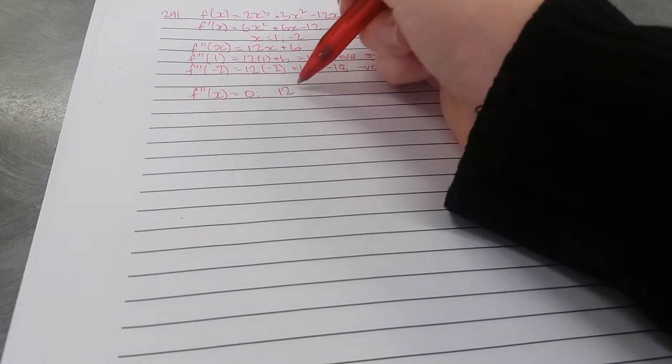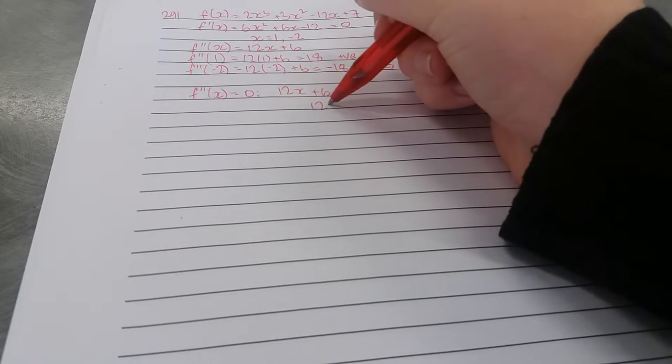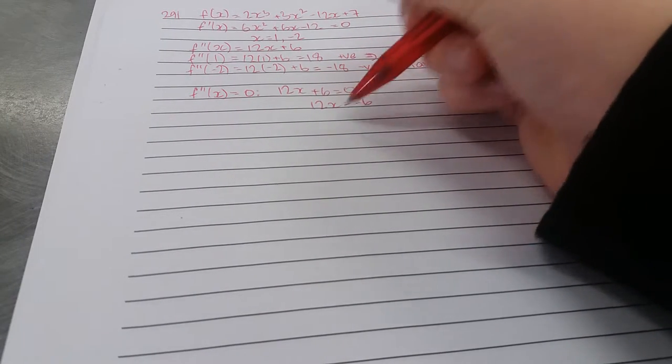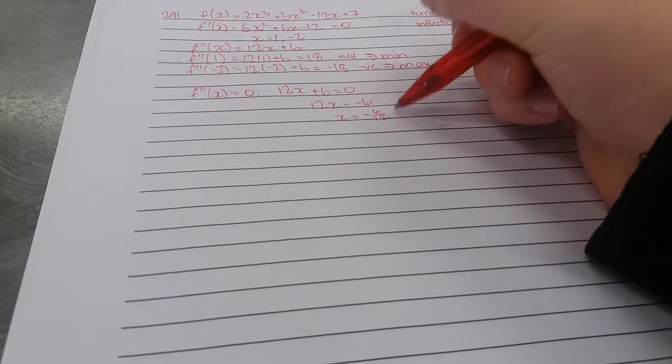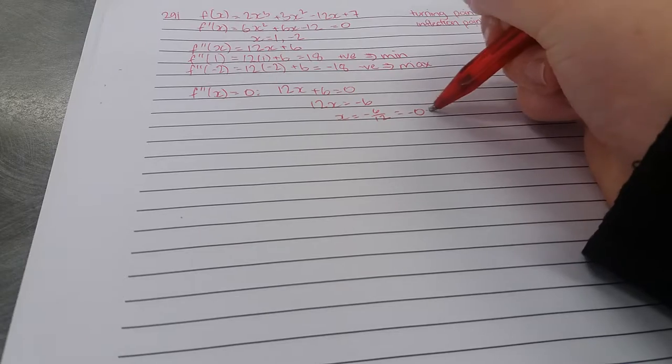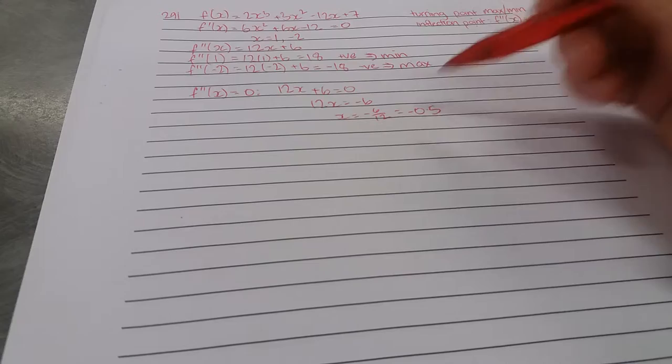which means 12x + 6 = 0, 12x = -6, x = -6/12 = -0.5. So this is our point of inflection here.